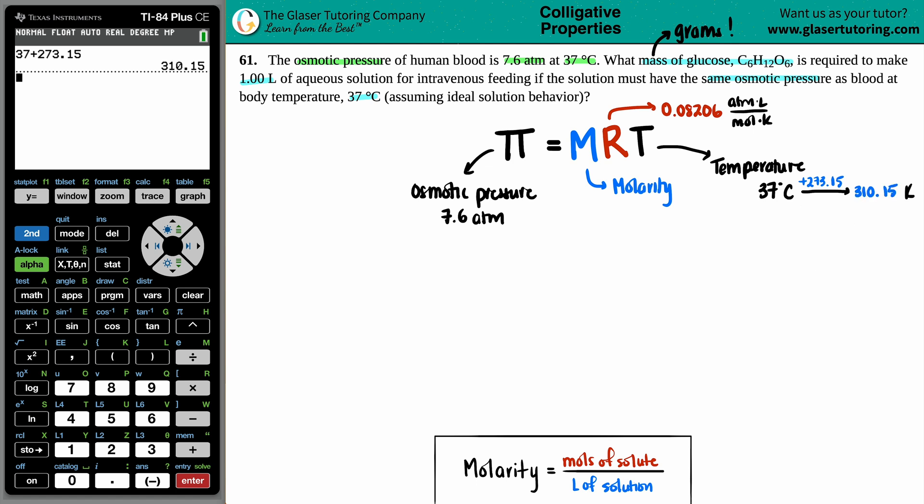So let's see. We have the osmotic pressure. The R value is always going to be there, so we have that. We got the temperature. The only variable that we don't have in this case is the molarity. So maybe we have to solve for molarity in order to somehow get down to the grams. That's the first thing we're going to do.